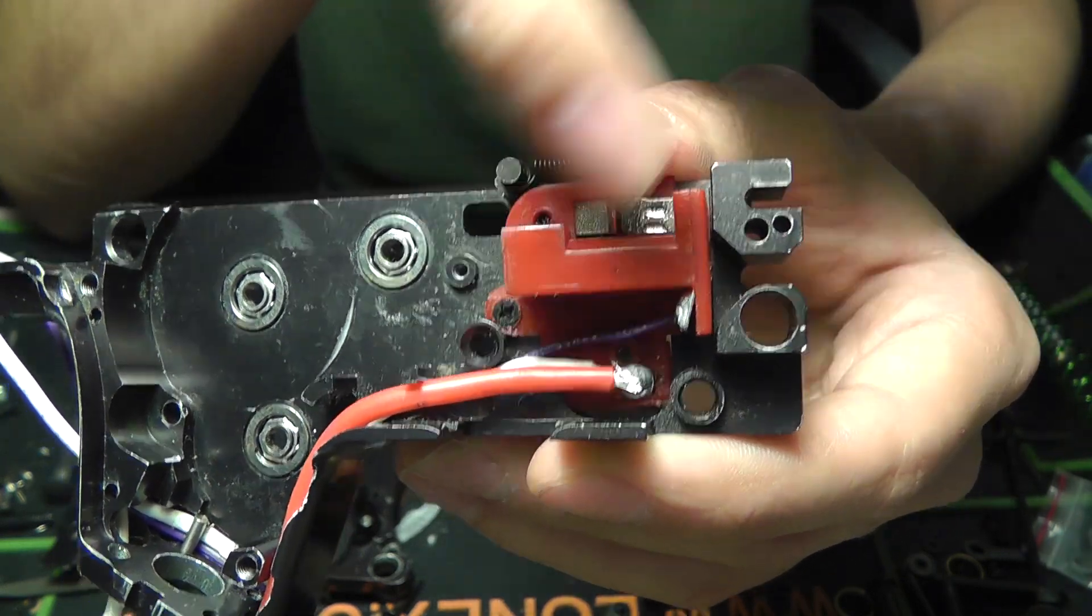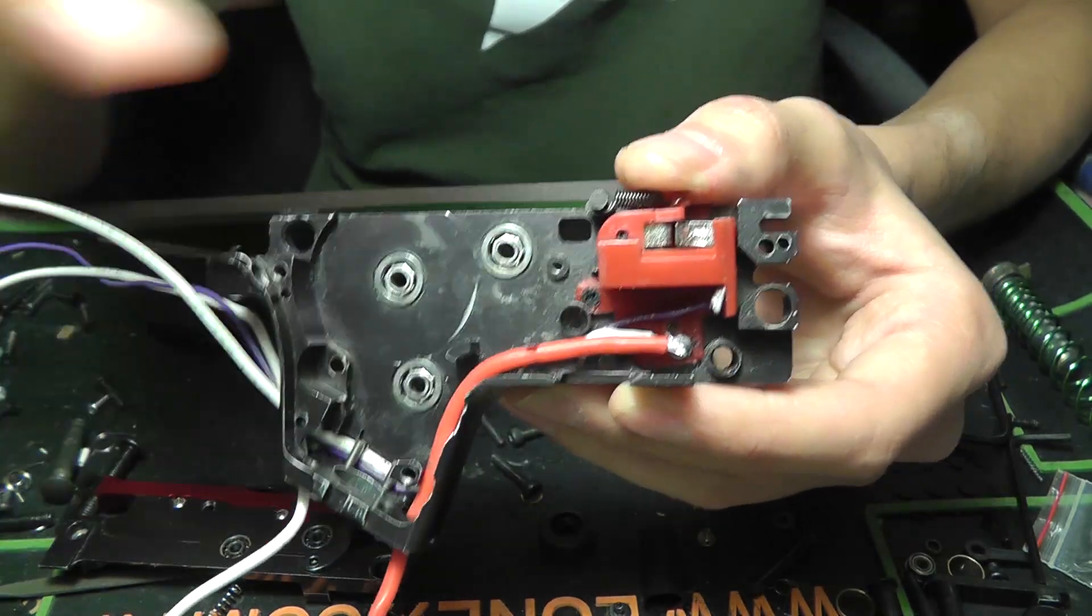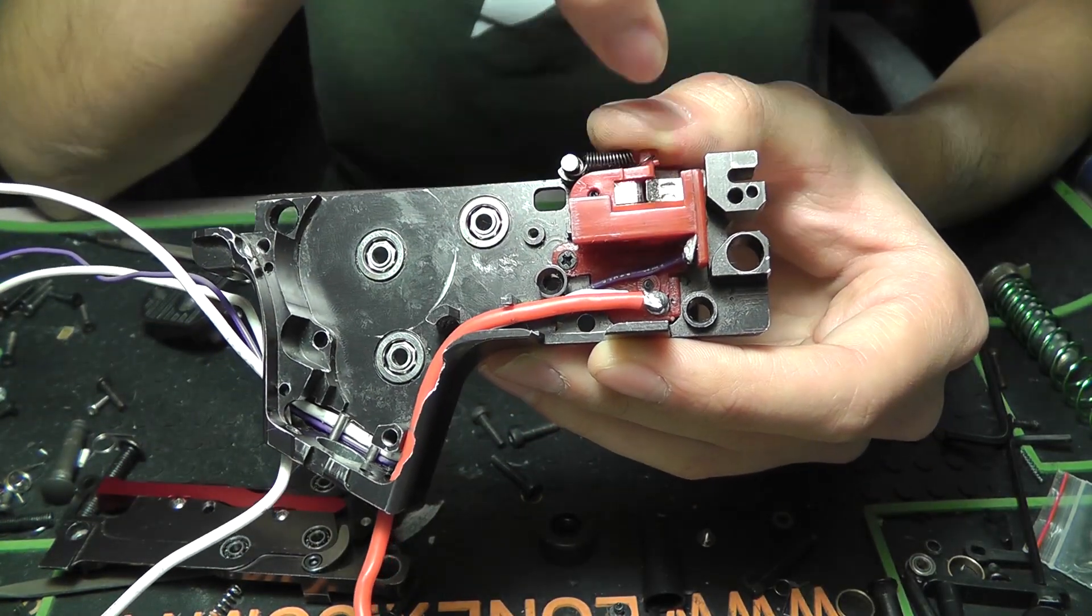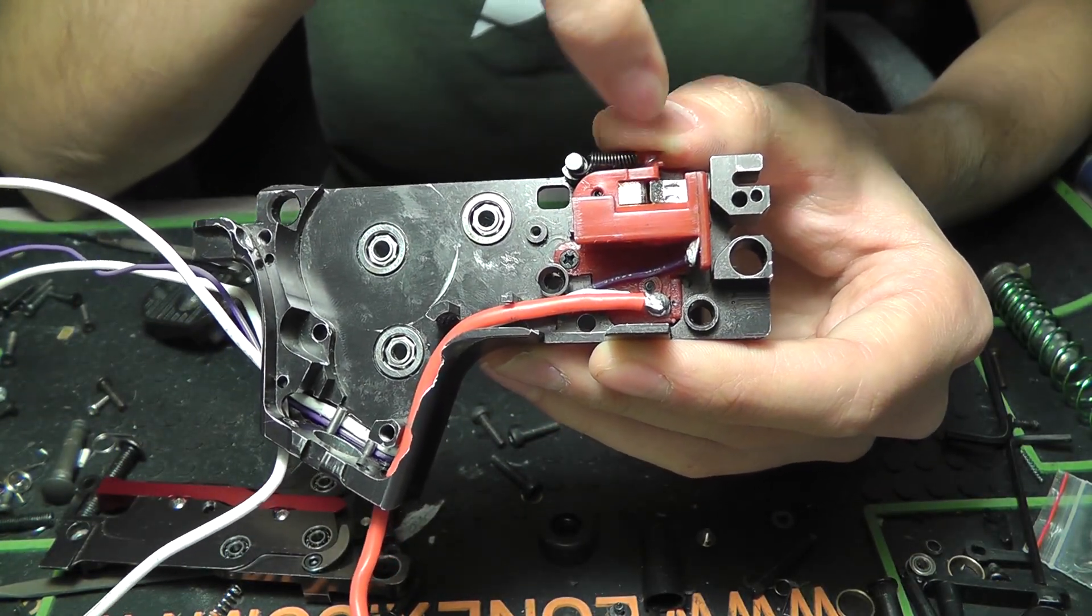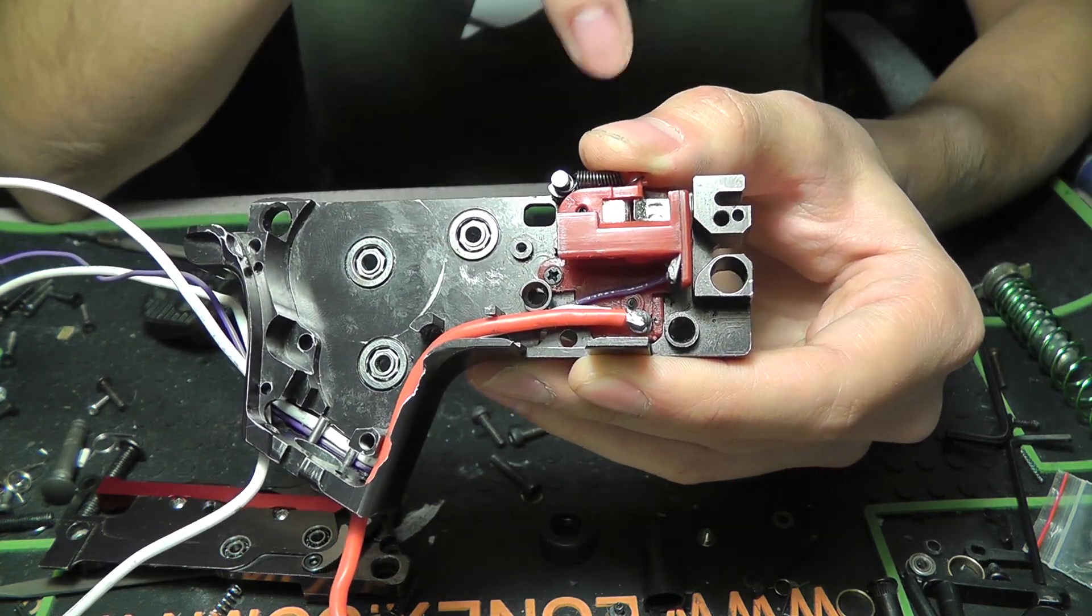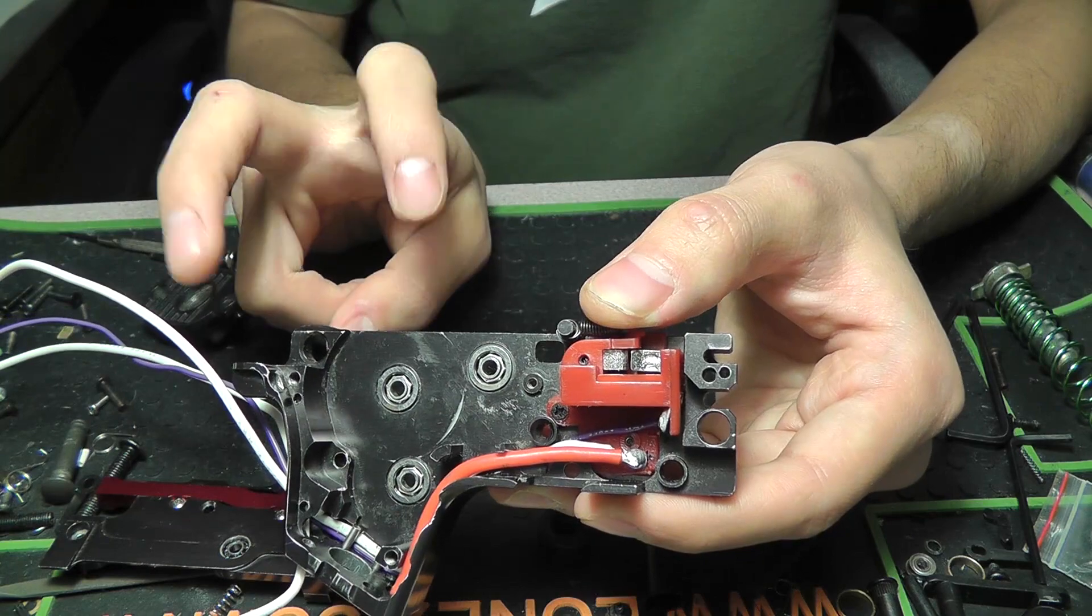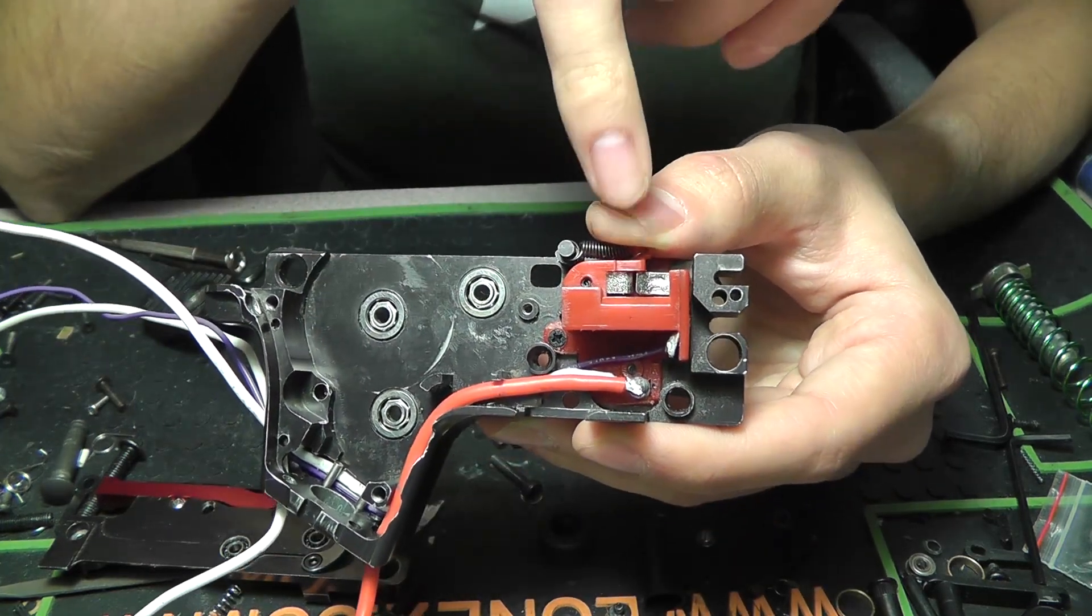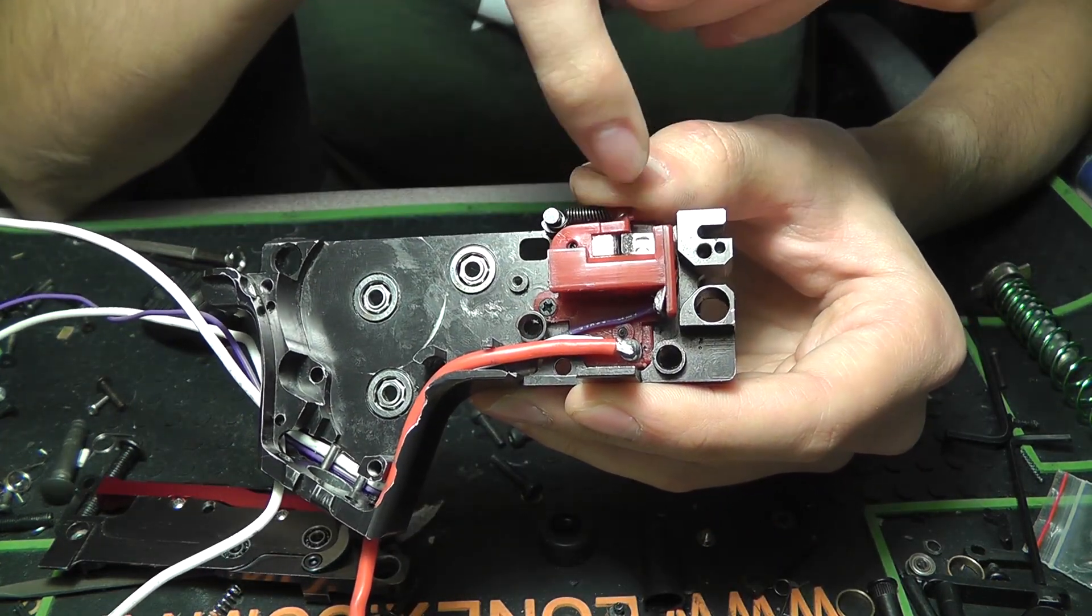What that can do over time is create heat and carbon buildup, and it'll eventually char and burn out your trigger contacts. This is actually very common on guns like KWA. Even though they're rated lipo-ready, their trigger contacts are relatively thin, so they burn out a little bit quicker than others.